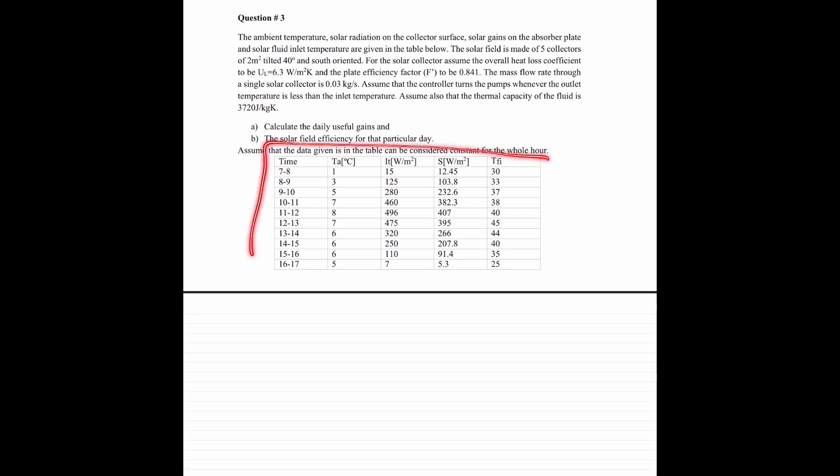So we have this data. We're supposed to find QU for each hour, and then we need to find the efficiency for the whole day. So what we need to do is find QU for each one, and then add them up, find the sum, and then find the efficiency for the sum of the QU that we found.